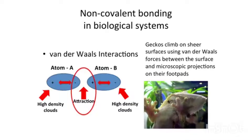Geckos, for example, can climb on glass and very sheer surfaces using van der Waals forces, because they have microscopic projections on their foot pads that interact with surfaces through these van der Waals interactions. So while very weak, in aggregate, if you have a number of them, they are strong enough to allow walking up a sheer wall. And yet the foot pad is able to release and move forward, so it is a transient interaction.